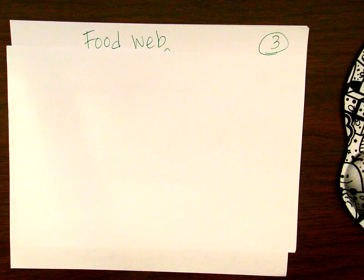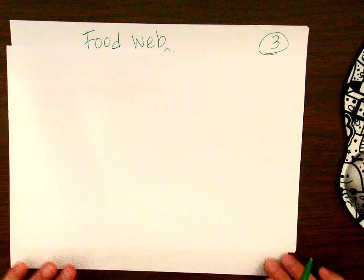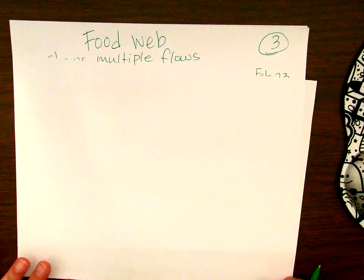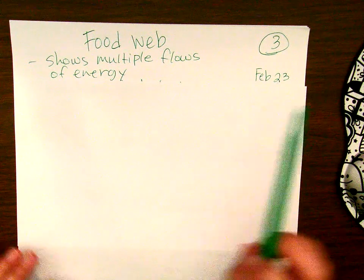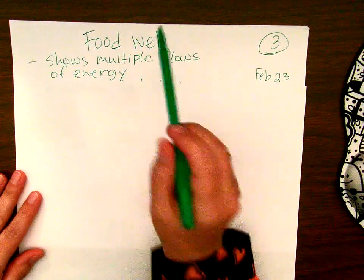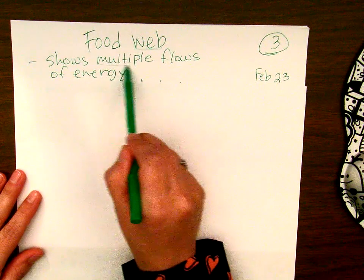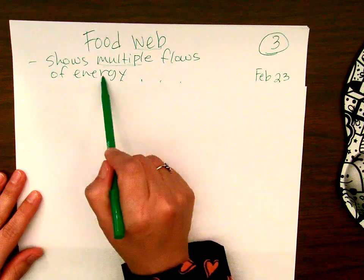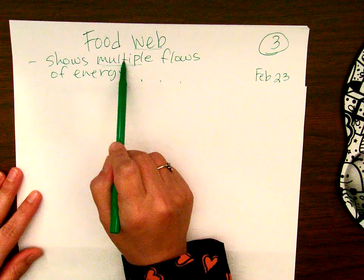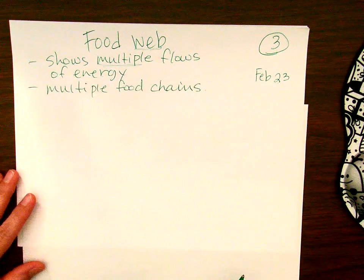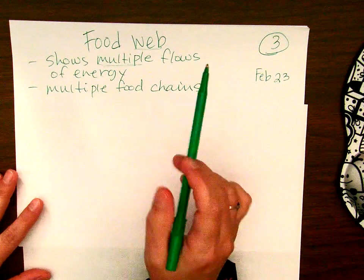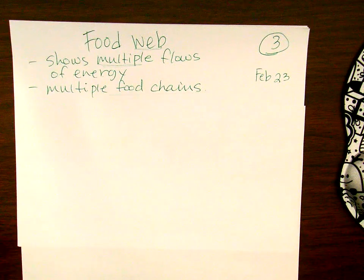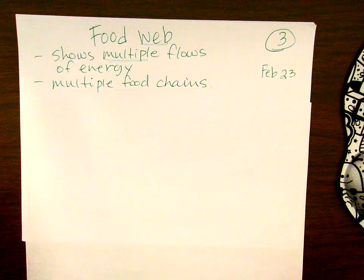We're starting our third section of our notes and we're going to call this one 'food web.' This pertains to a Schoology assignment you did on February 23rd. The food web shows multiple flows of energy through an ecosystem, and it shows multiple flows because a food web is really just showing you multiple different food chains — it has more than one food chain.